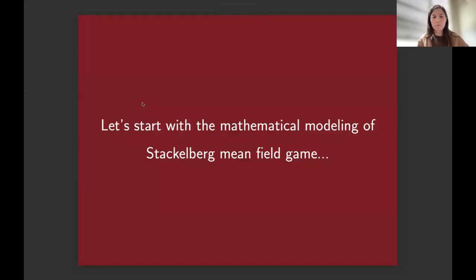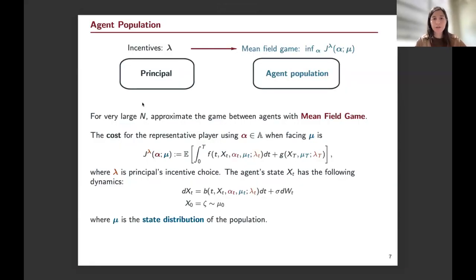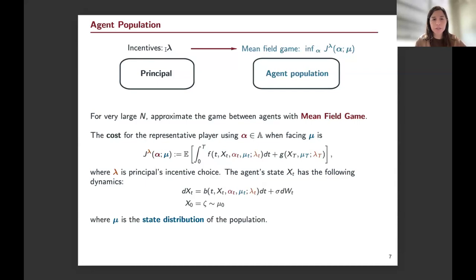Let's start with the mathematical modeling. I'll assume the principal sets incentives beforehand. Given these incentives, I focus first on the agent population and then on the principal's optimization. The incentives are initially taken as time-dependent and denoted lambda_t. We will discuss extensions with path-dependent incentives later. The representative player's cost function has a running cost part and a terminal cost part in a continuous time model.